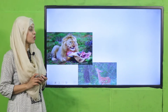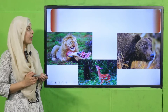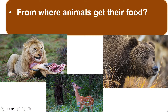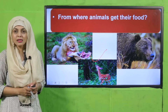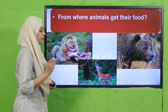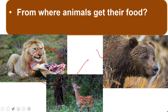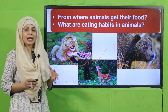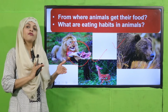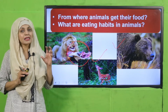Now it's time for an activity. Quickly look at the pictures carefully — you can see different animals and their eating behaviors. Tell me, from where do animals get their food? Some animals feed on plants, some animals feed on meat or other animals, and some animals, like bears, eat both plants and animals. These are the eating habits of different animals.